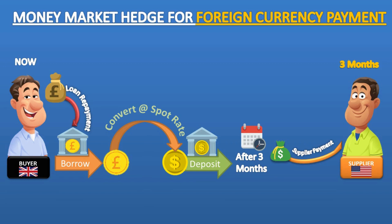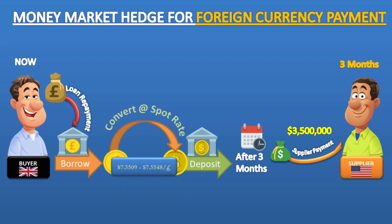Let's take an example with numbers. A UK buyer owes an American supplier $3,500,000 payable in three months' time. The spot exchange rate is 7.5509 to 7.5548 dollars per pound. The company can borrow in pounds for three months at 8.60% per annum and can deposit dollars for three months at 10% per annum. We want to find the cost in pounds with a money market hedge and what effective forward rate this would represent.